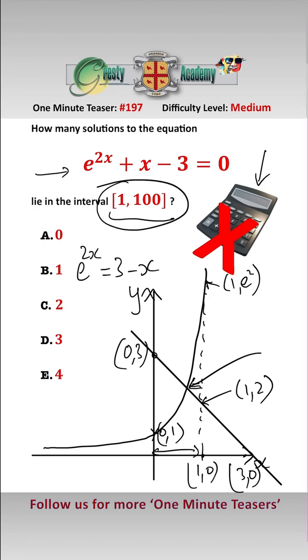So it is clear that the crossover point is in the interval 0, 1, and therefore there are no solutions in the interval 1 to 100. So the answer is a, 0.